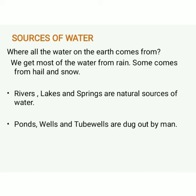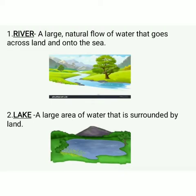Now let's see rivers. Rivers, lakes, and springs are natural sources of water. Ponds, wells, and tube wells are dug by man. A large natural flow of water that goes across land and into the sea is called a river, and a large area of water that is surrounded by land is called a lake.